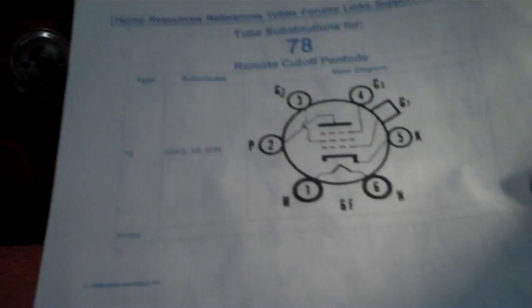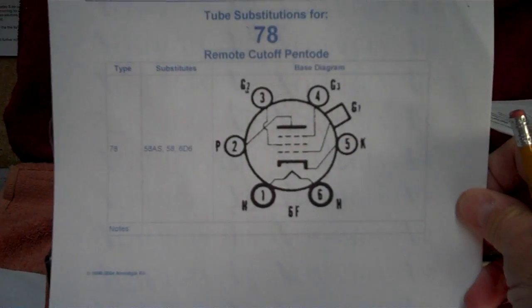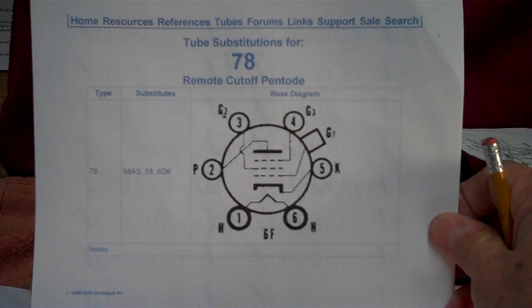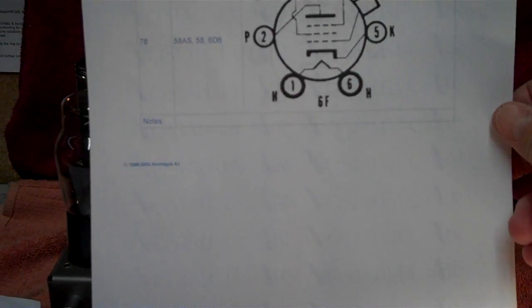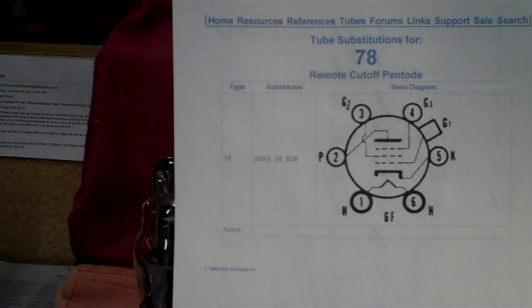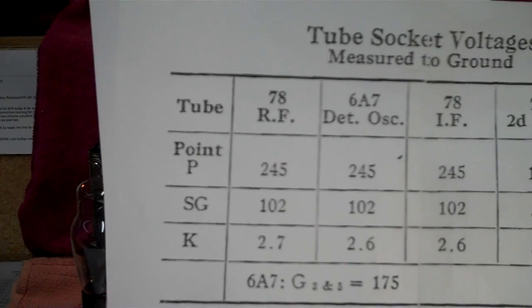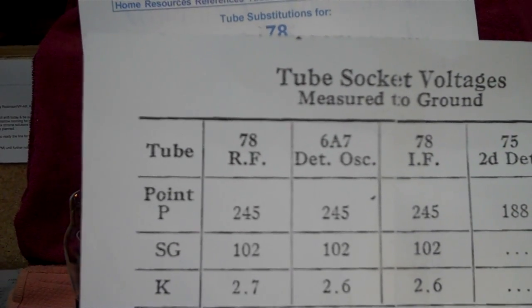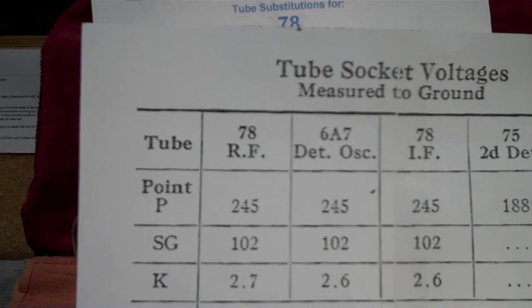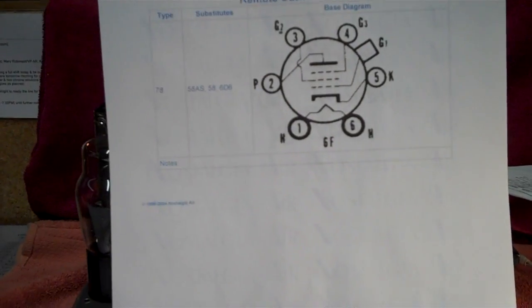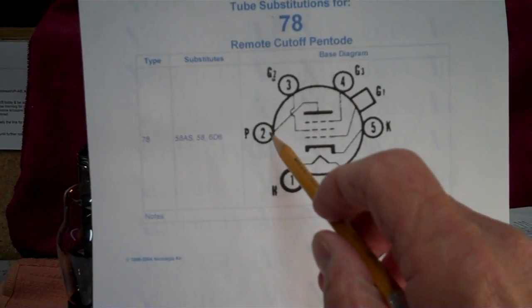So what I'm going to do here is I printed it off of Nostalgia Air under tubes. You can find your tube, and it tells you what your pins are. You recall it way back when we did this. And according to, let's just do a little match-up here. It says tube, let's look at the 78. The 78 is the first tube, point P, which is the plate, which is 245 volts. Now the plate will be pin 2.